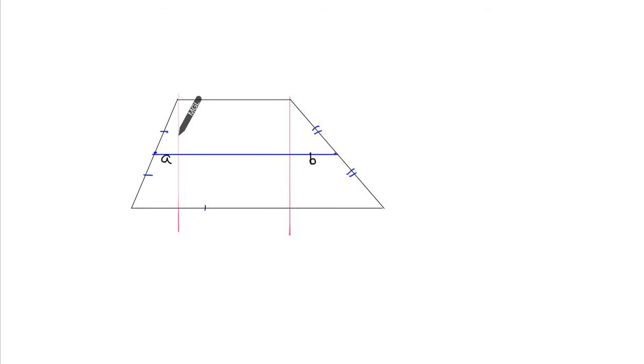And since this and this is a similar triangle and this is one to two ratio, this will also be 2A. For the same reason, this will be 2B. And let's just call this X. This will be X and this will be X.